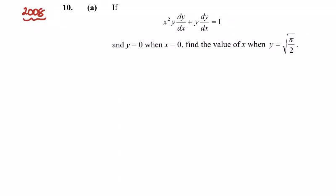This is the 2008 question 10 differential equations. Given this equation here, we're asked to solve when y is equal to 0 when x is equal to 0, and then find x when y is square root of pi over 2.